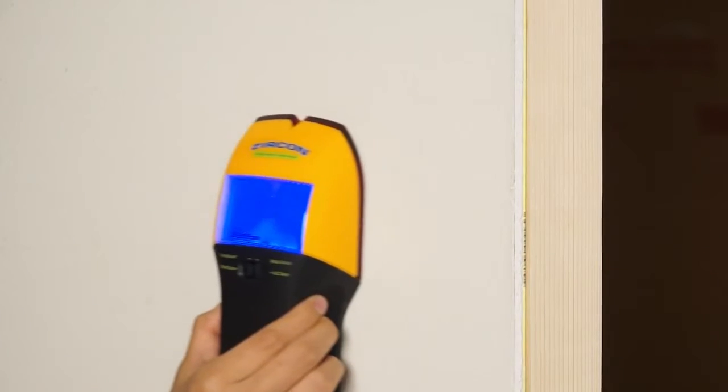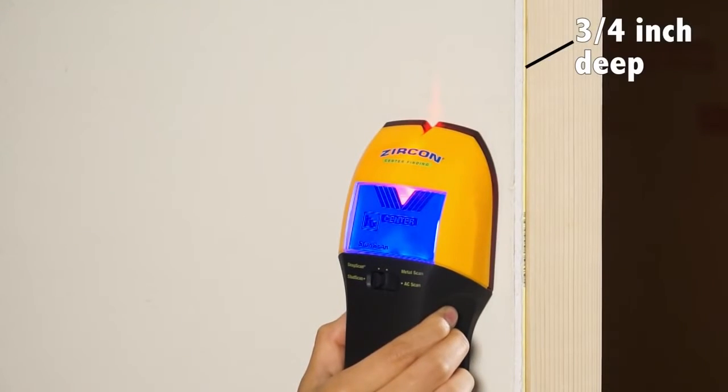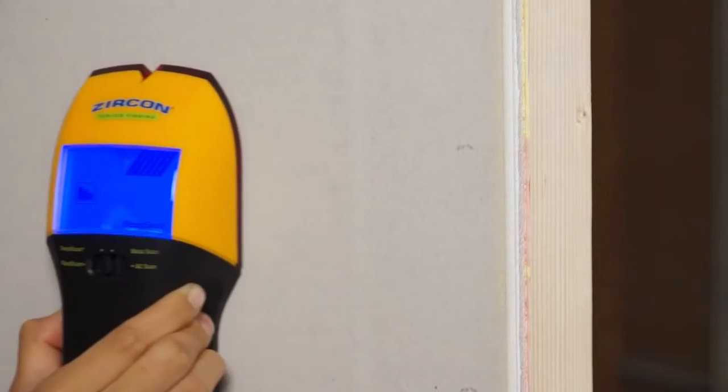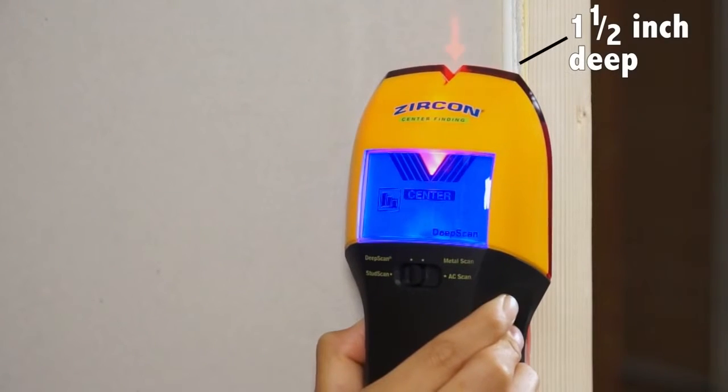It has four modes: stud scan to find the center of studs up to three quarters of an inch deep, deep scan to find the center of studs up to one and a half inches deep,